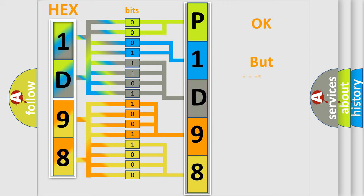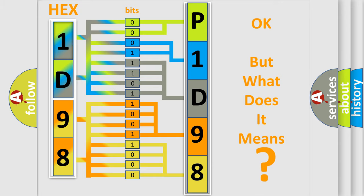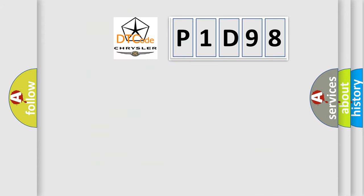We now know how the diagnostic tool translates received information into a more comprehensible format. The number itself does not make sense if we cannot assign meaning to what it actually expresses. So, what does the diagnostic trouble code P1D98 interpret specifically for Chrysler car manufacturers? The basic definition is as follows.